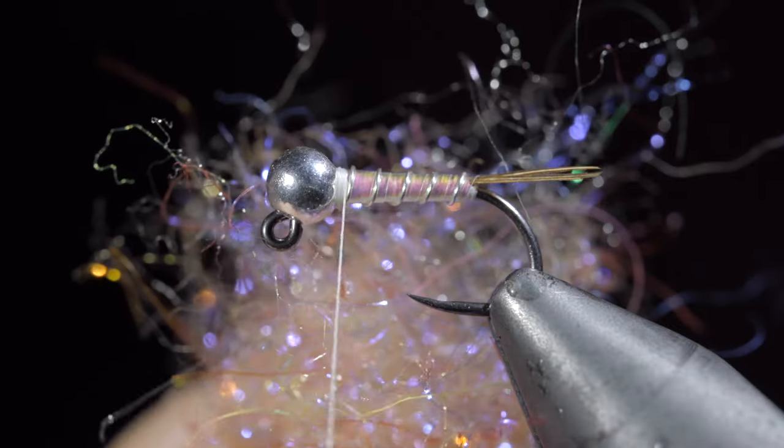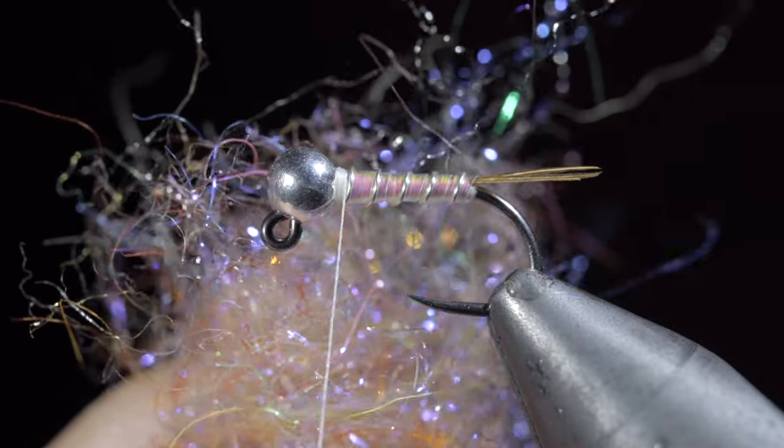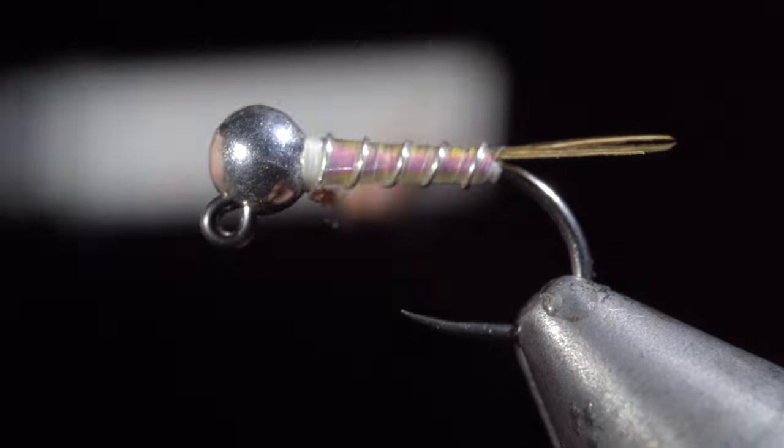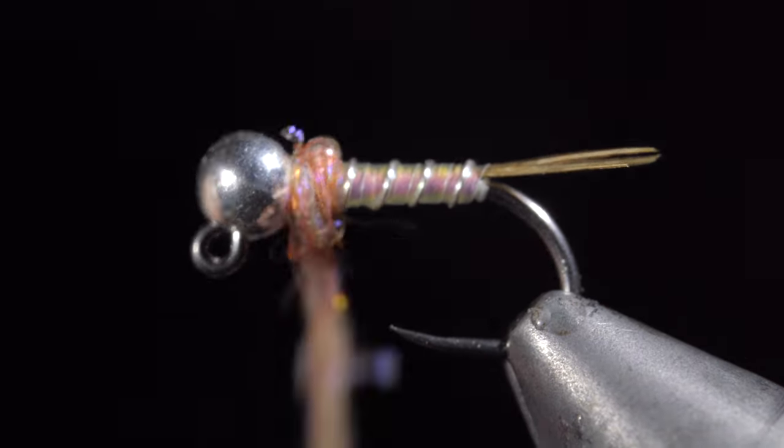We will then grab some dubbing. Here I've made a nice custom mix of some tans, pink, purple, and blue. Create a dubbing noodle and wrap that tightly around the head of our fly.